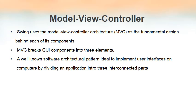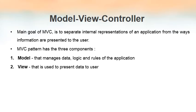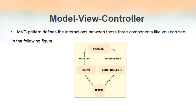By dividing an application into three interconnected parts, the main goal of MVC is to separate the internal representations of an application from the ways in which it is represented to the user. MVC has three parts: Model, View, and Controller. Model manages the data, logic, and rules of the application. View represents how the data is presented to the user. Controller accepts input from the user and conveys it to the Model or the View. This figure clearly explains the interactions between the three components of MVC.